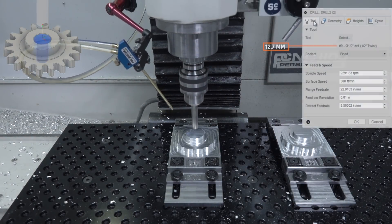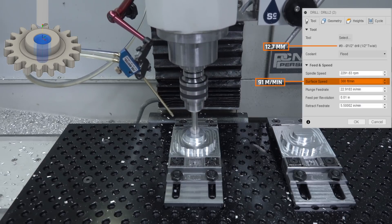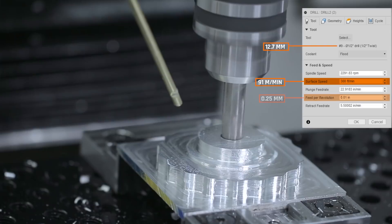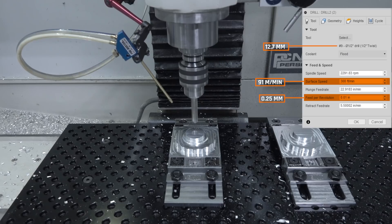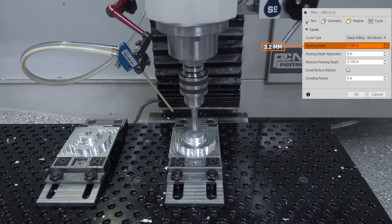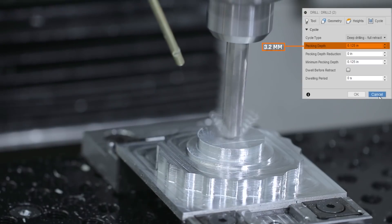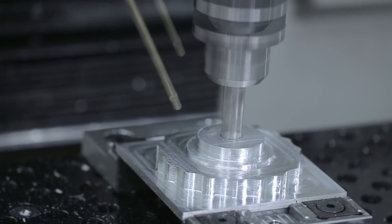Half inch twist drill running at 300 surface feet per minute, 10,000 feet per revolution, pecking every eighth of an inch. This is purely to poke a clearance hole so that we don't have to plunge with our end mill.